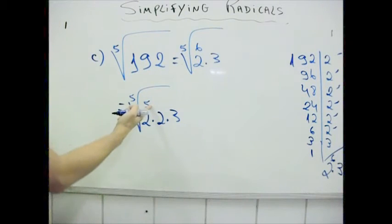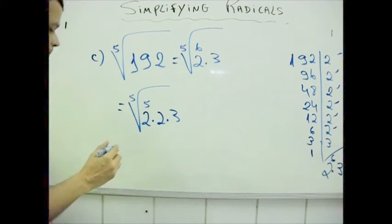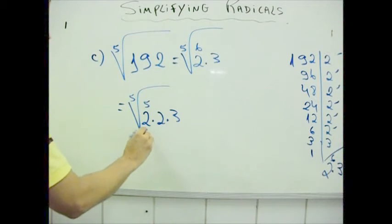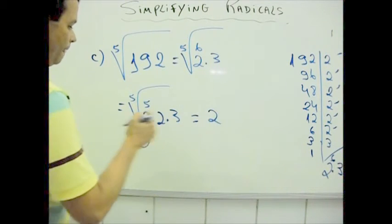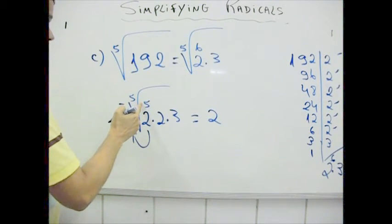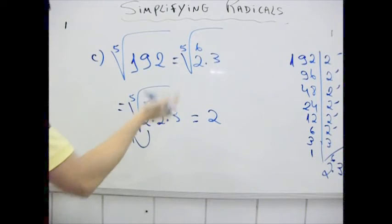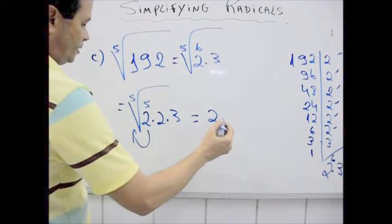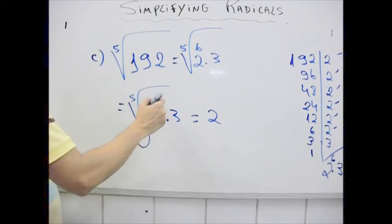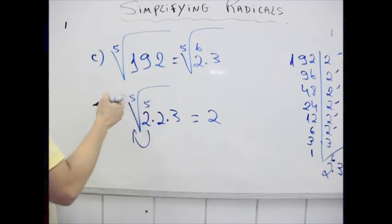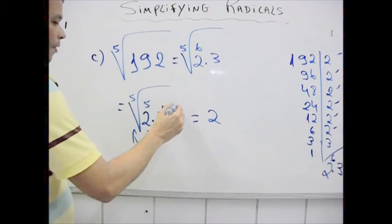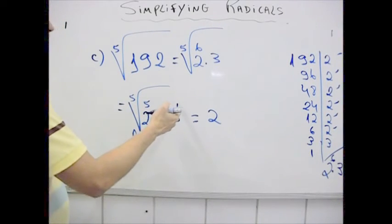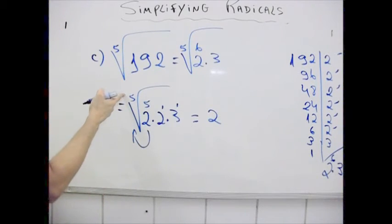This exponent is divisible by this index, so I can put it out like this: 2, 5 divided by 5 is 1. This exponent is not divisible by this index. Also, this exponent is not divisible by this index.